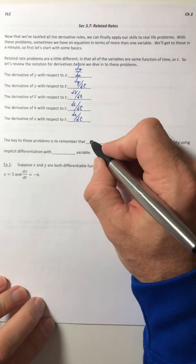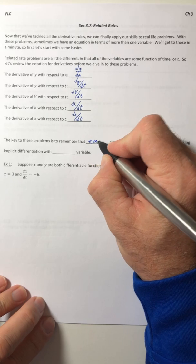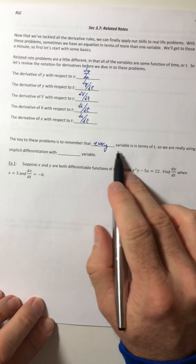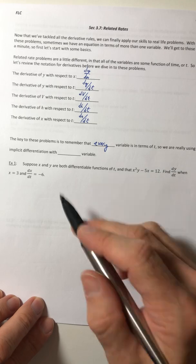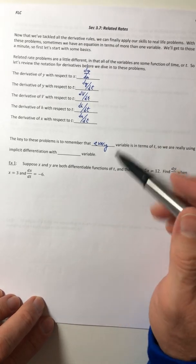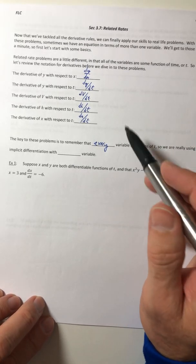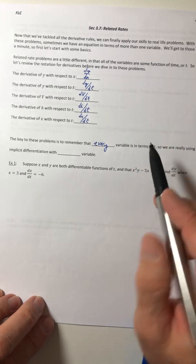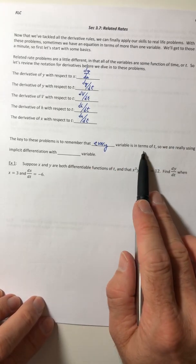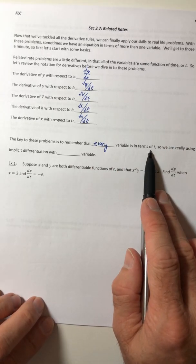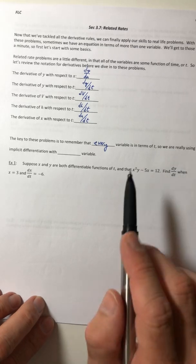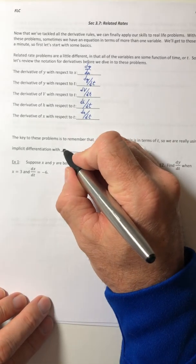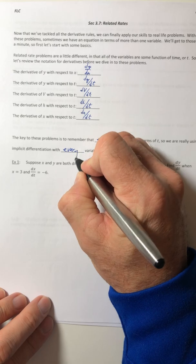So the key to these problems is to remember that every variable is in terms of t, all of them. So whether you have v, h, a, b, c, d, all of them are in terms of t. So we are really using implicit differentiation with every single variable.